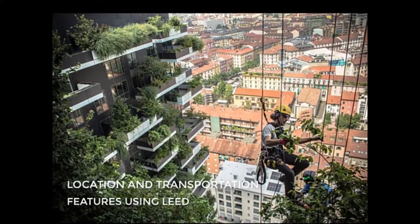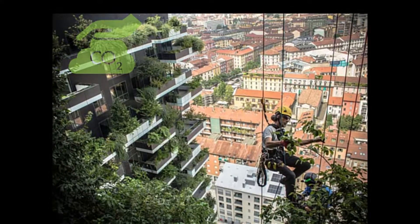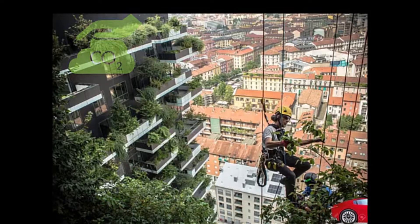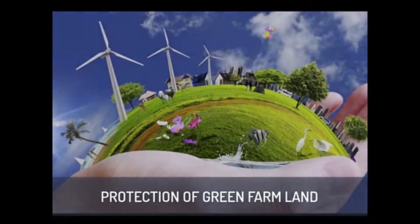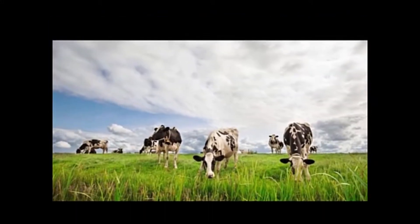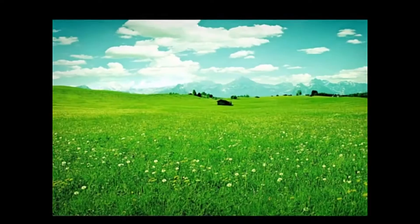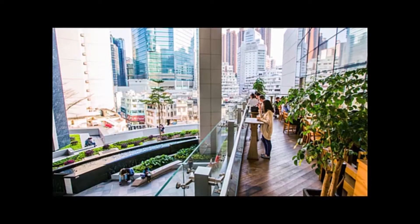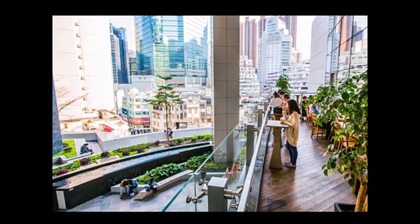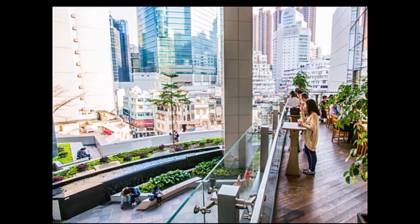Location and Transportation: LEED promotes locating a building in a dense urban area to reduce GHG emissions by minimizing transportation to and from the building. It focuses on the protection of green farmland and their associated habitat and endangered species by avoiding construction on green land. Through building location in a dense urban area, infrastructural development costs and the associated environmental impacts can also be reduced.